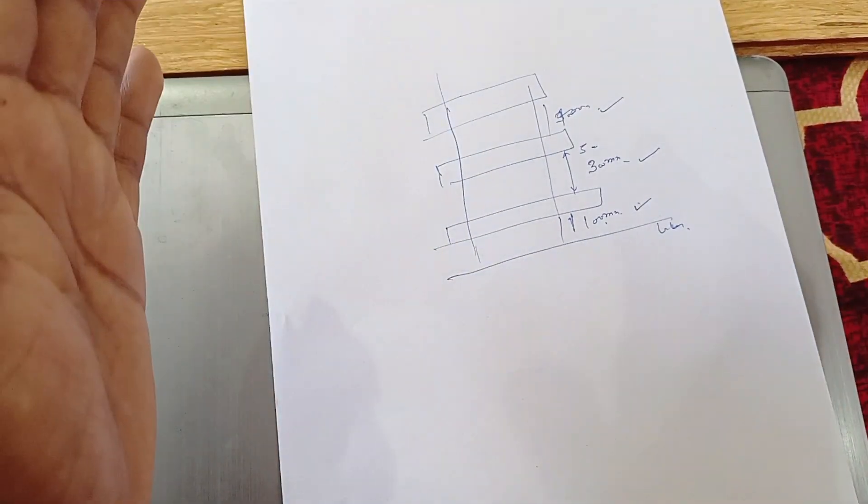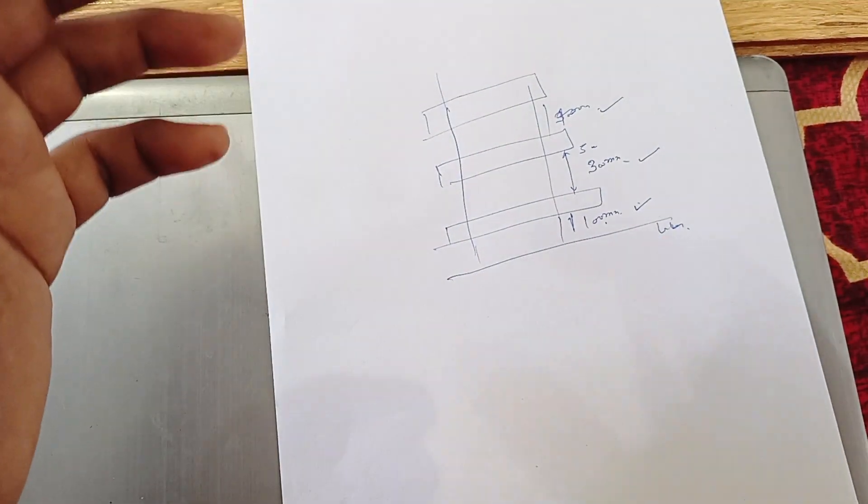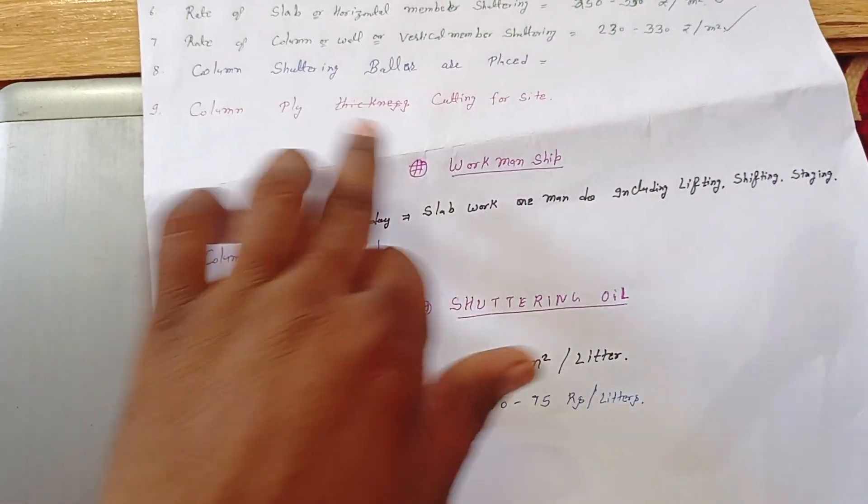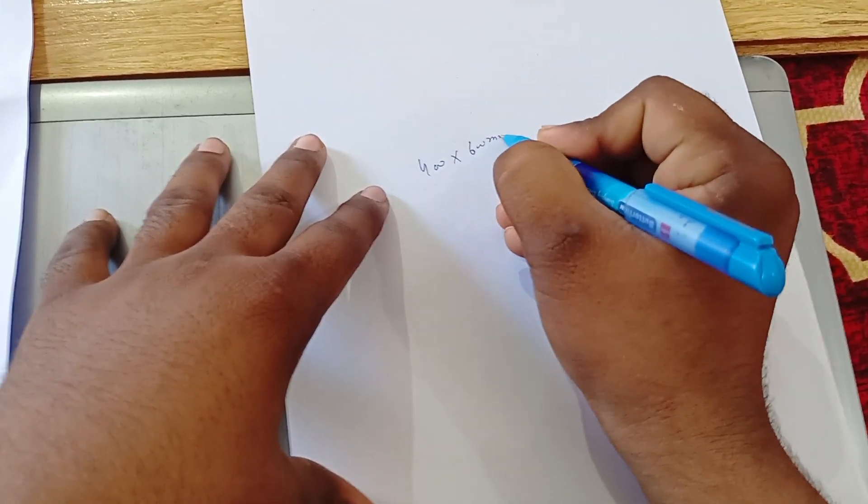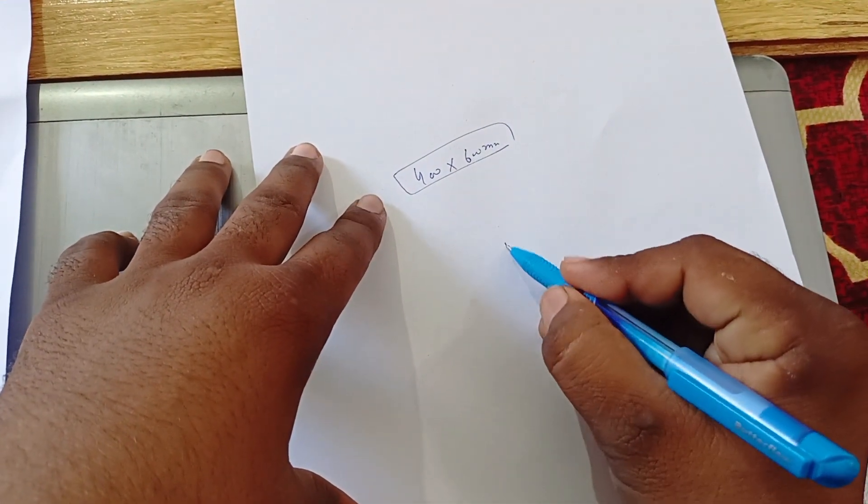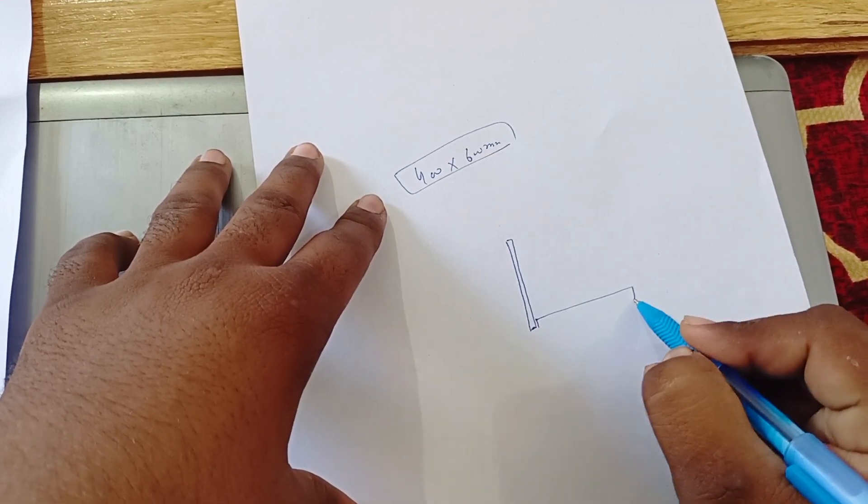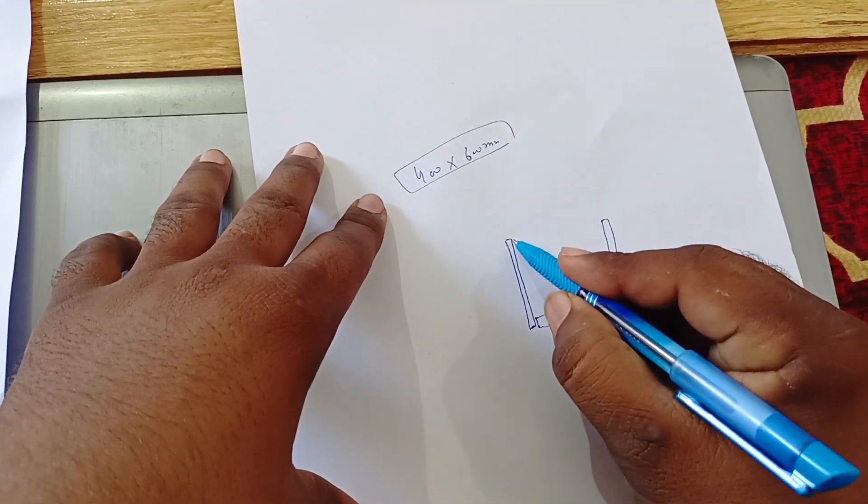So that our shuttering ply will not lose or not collapse or not failure of shuttering. Next they are generally used column shuttering. Column ply cutting for side. Generally suppose our column is 400 x 600mm, so how we will cut the ply. So we will cut like this, one place, like this.